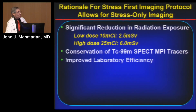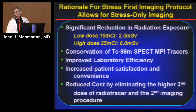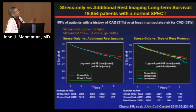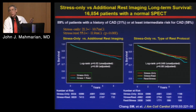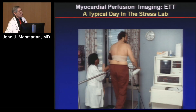Stress-only imaging not only gives low radiation, it also conserves technetium since you don't give the high rest dose, improves laboratory efficiency, increases patient satisfaction and throughput, and reduces cost by eliminating unnecessary imaging procedures. We published data on about 18,000 patients showing no difference in outcomes in patients who had normal stress-only versus normal stress-rest studies — one of the first publications to demonstrate you could do a stress-only study without impacting patient outcome. Over 60% of patients get less than 5 millisieverts when doing stress-only imaging.